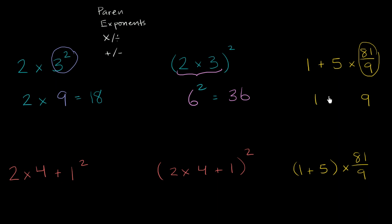And then we have, so it becomes 1 plus 5 times 9. Now we want to do the multiplication before we do the addition. So we're going to do our 5 times 9, which is 45. So this becomes 1 plus 45, which of course is equal to 46.